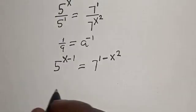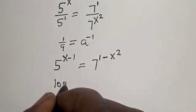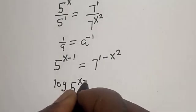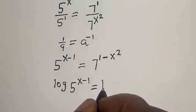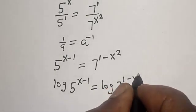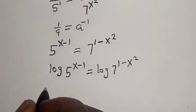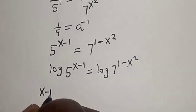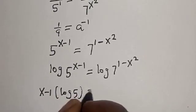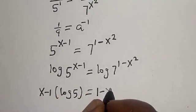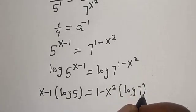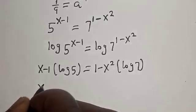Then let's take the log of both sides. Log of 5 raised to the power of x minus 1 is equal to log of 7 raised to the power of 1 minus x squared. Then this is (x minus 1) log 5 is equal to (1 minus x squared) log 7.